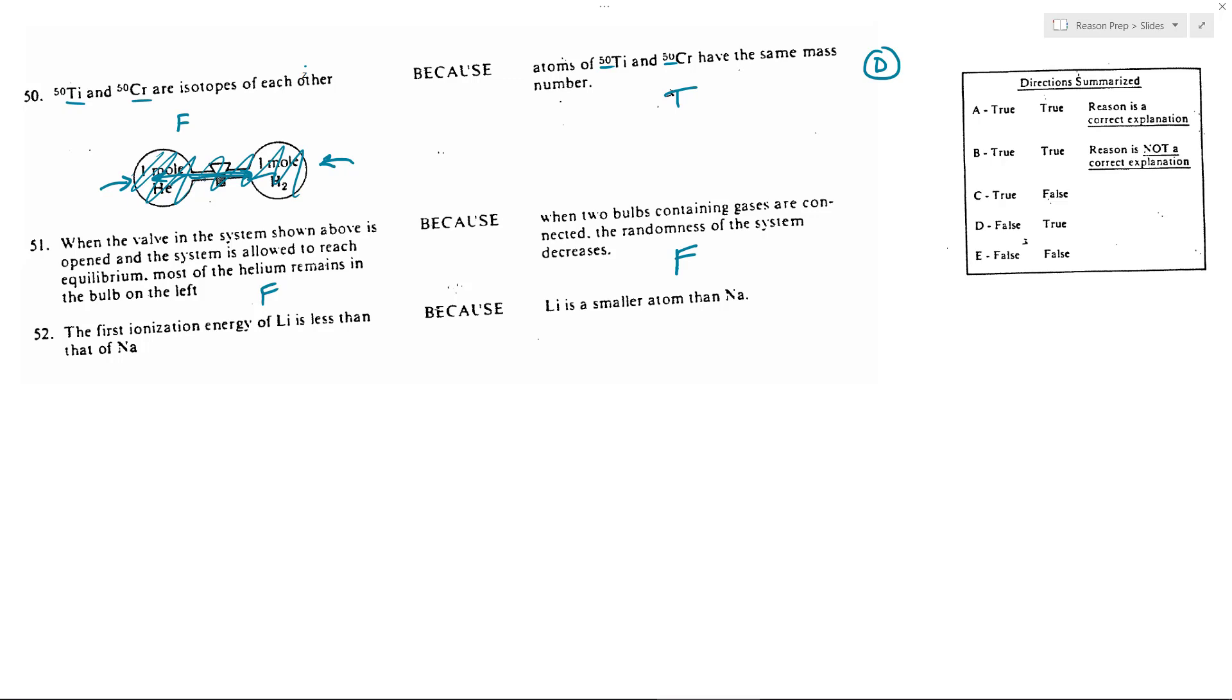And so that means the randomness would increase, not decrease. So that should be false. And therefore, 51 is E.